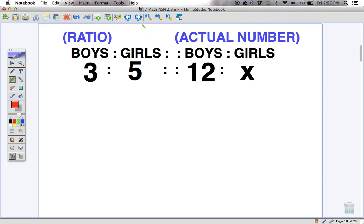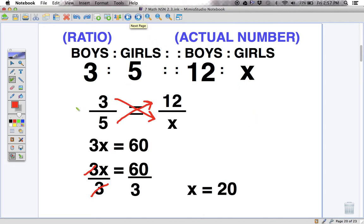There's another way of doing it, though. And this is using what's called cross multiplication. We discussed in class that ratios are actually fractions. It can be expressed as a fraction. So 3 is to 5, or 3 to 5 is 3 fifths. 12 to x is also 12 over x.